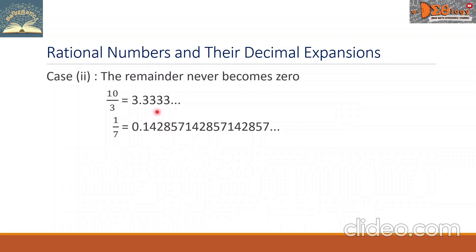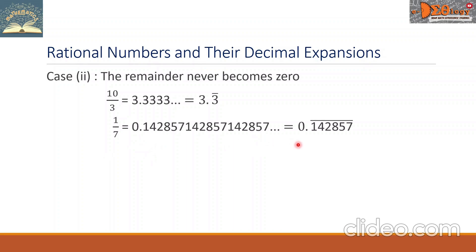Some books will write 3.33333 and so on with bar notation: 3.3 with a bar on the 3. That means the digit 3 is repeating. In the same way, for 1 over 7, with this long list of decimals, we write 0.142857 with a bar on top of all these digits.